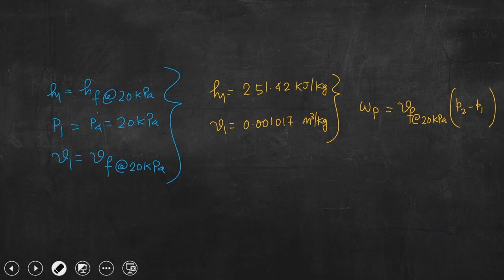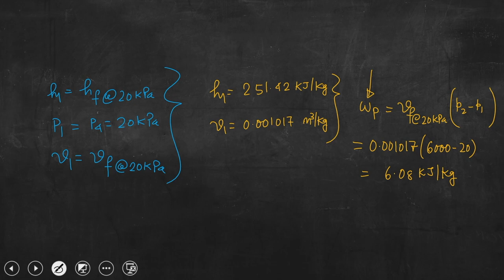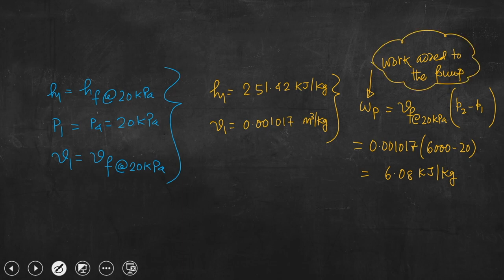W_pump = 0.001017 × (6000 − 20) kPa = 6.08 kJ/kg. This is the specific work added to the pump — we express quantities per unit mass (per kg) of the working substance.